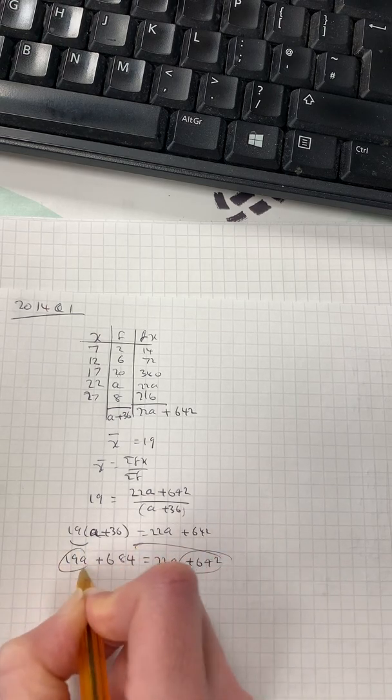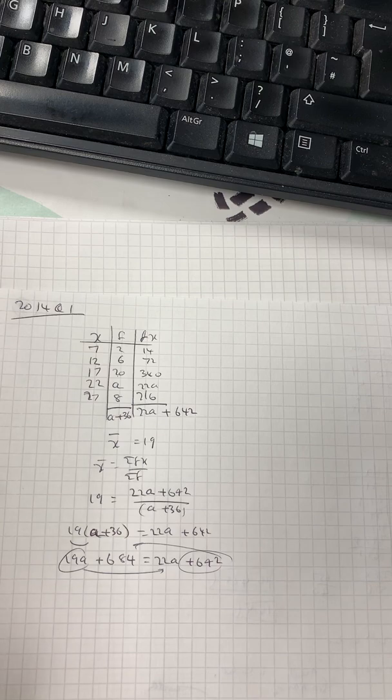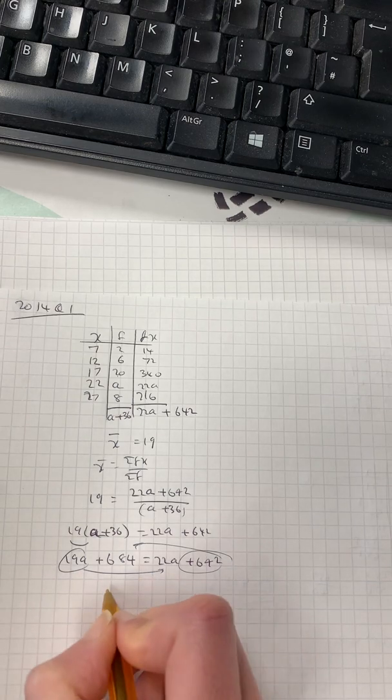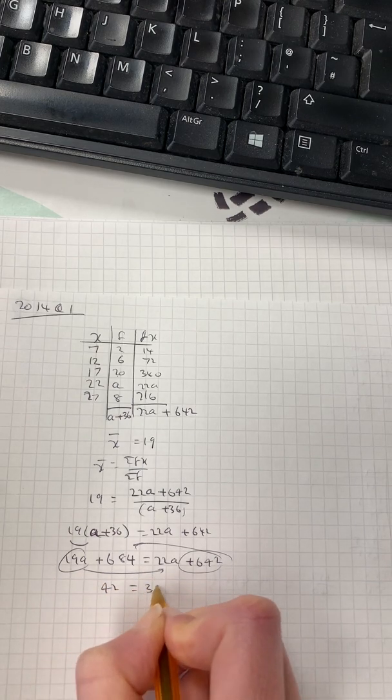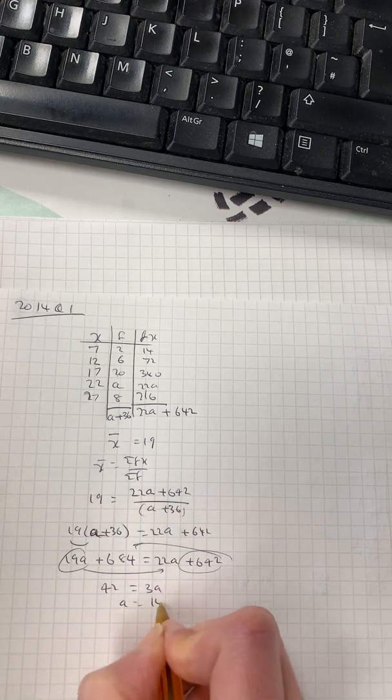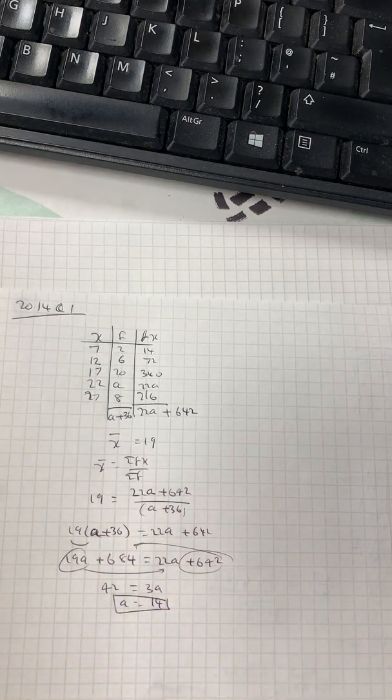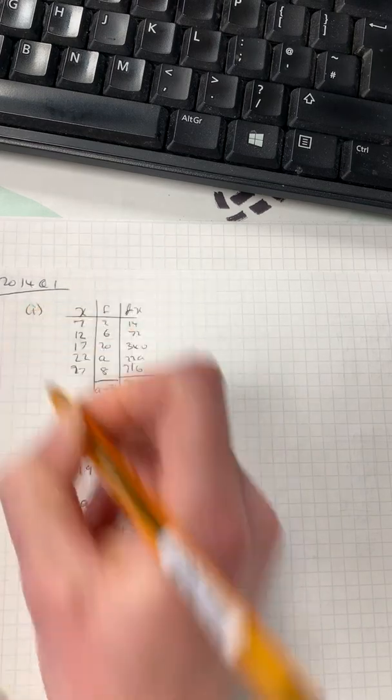I'm rearranging this. So 684 minus 642 gives me 42, equaling 3a. So 42 divided by 3a is 14. And now I have to find the standard deviation.